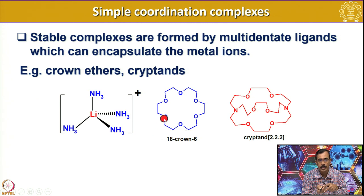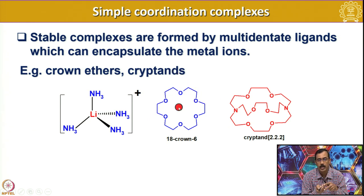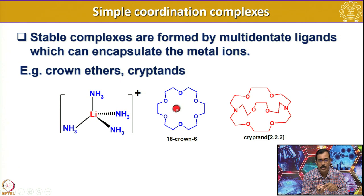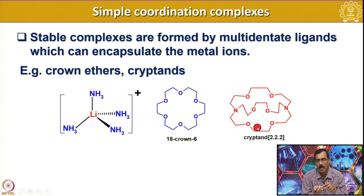If you start counting the atoms in the ring: 1, 2, 3, 4, 5, 6, 7, 8, 9, 10, 11, 12, 13, 14, 15, 16, 17, 18 — so 18 atoms are there in the ring, and we have 6 oxygen atoms. Usually it looks like a crown, which is why it is named 18-crown-6.